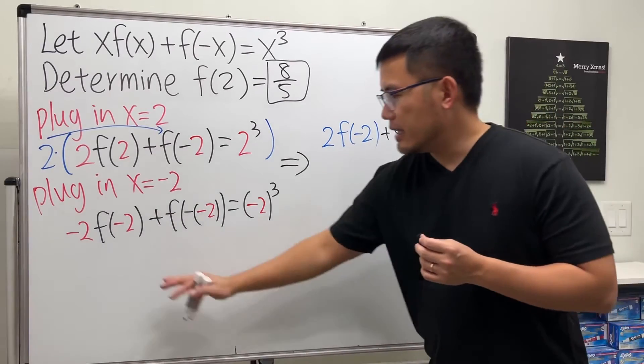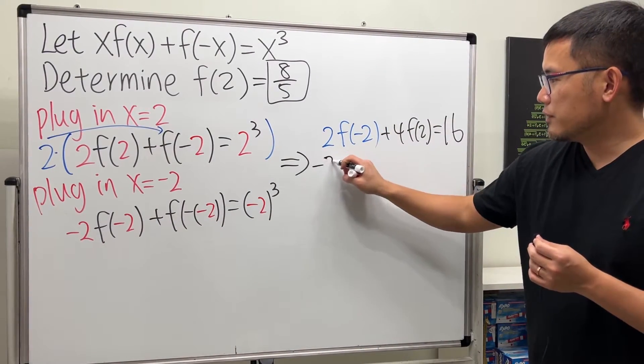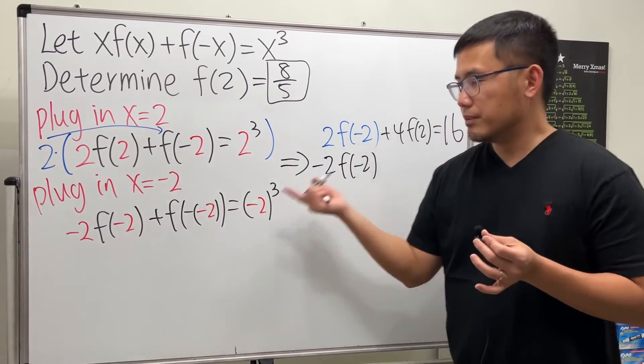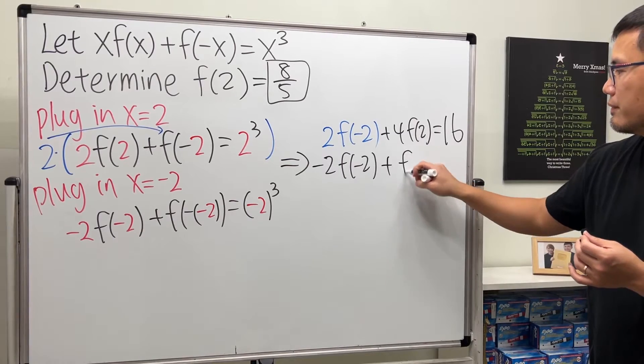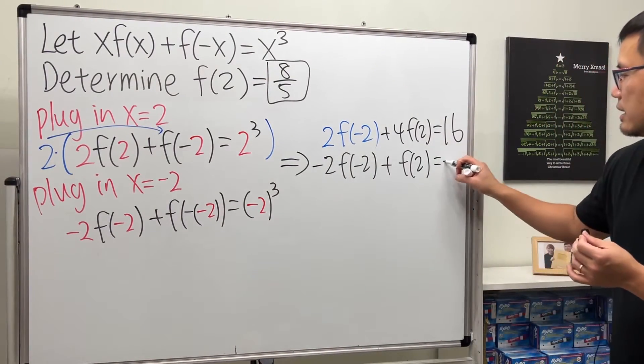All right, and then for this right here I'm just going to put it down. We have -2f(-2) + f(2) = -8.